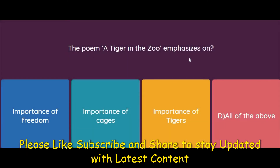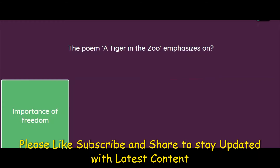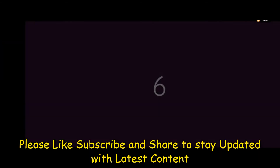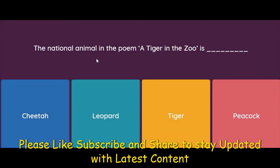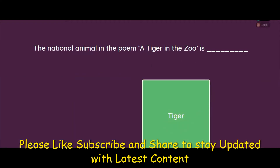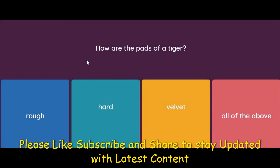The poem 'A Tiger in the Zoo' emphasizes the importance of freedom, importance of cages, importance of tigers, or all of the above? It emphasizes the importance of freedom — how important freedom is for animal life. What is the national animal in the poem? It's a tiger — an easy one.